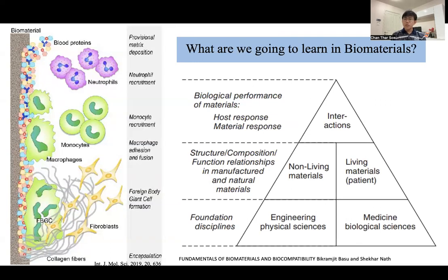In the biomaterial subject, there are two important things we need as background. In this triangle, at the bottom, we have the foundations and disciplines required for this class: engineering foundations and medicine foundations. For engineering, we need physical science; for medicine, we need biological science. These two main components — physical science and biological science — are essential.